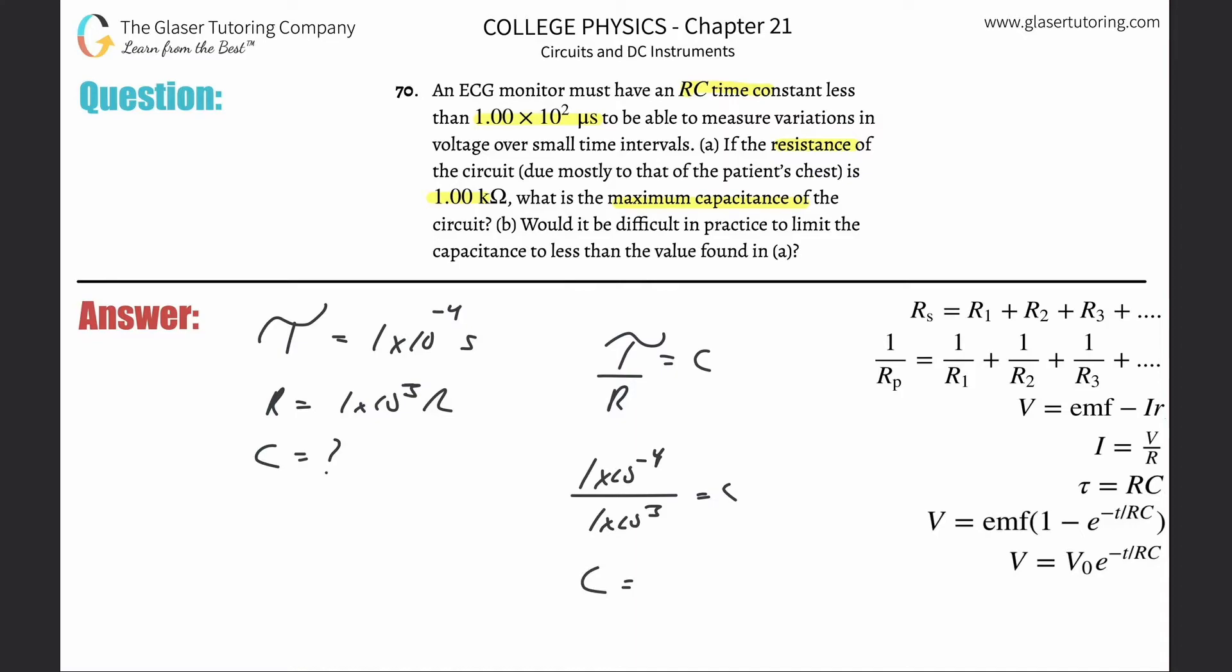So this is 1 times 10 to the 4th, oh, excuse me, 1 times 10 to the minus 4th, divided by 1 times 10. Why am I doing this in the calculator? I don't even know. I'm not even thinking. But this is just simply 1 times 10 to the minus 7th. And that will be it in terms of, what do we got? Farads.